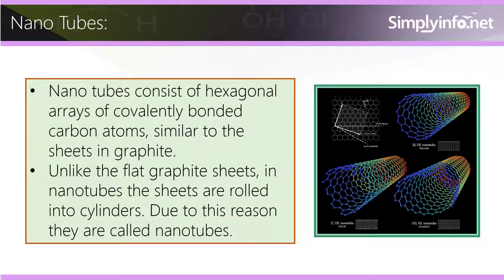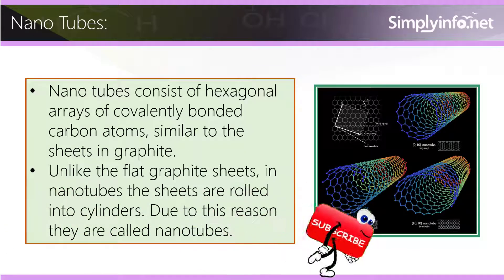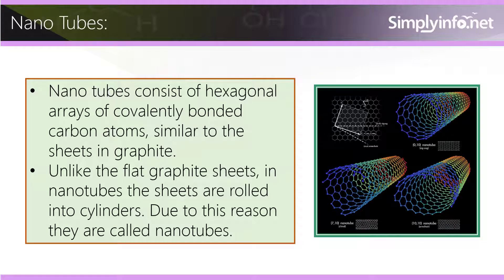Nanotubes consist of hexagonal arrays of covalently bonded carbon atoms, similar to the sheets in graphite. Unlike the flat graphite sheets, in nanotubes the sheets are rolled into cylinders. Due to this reason, they are called nanotubes.